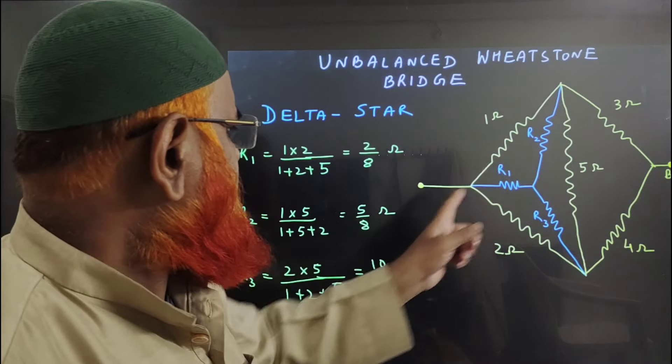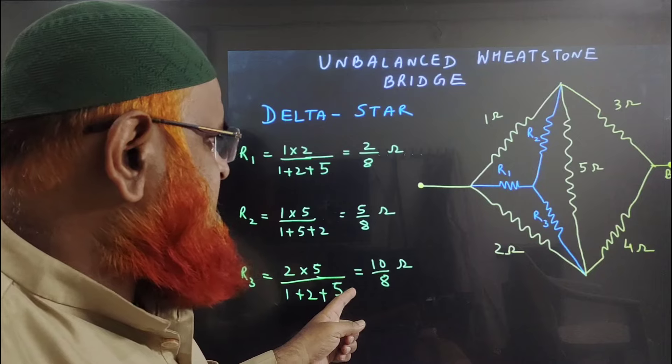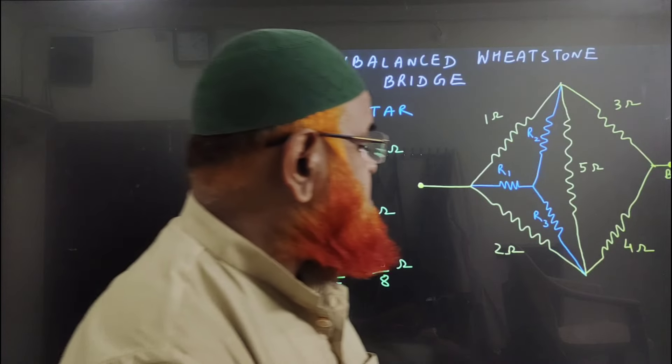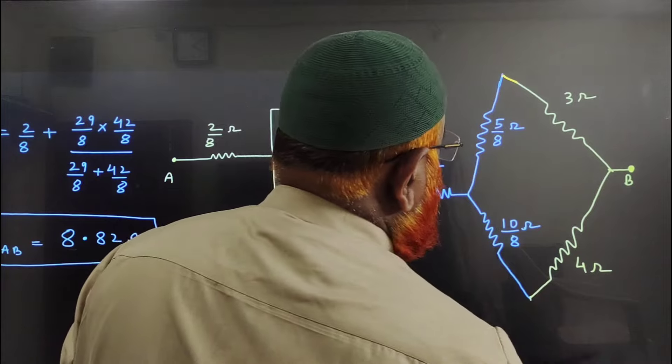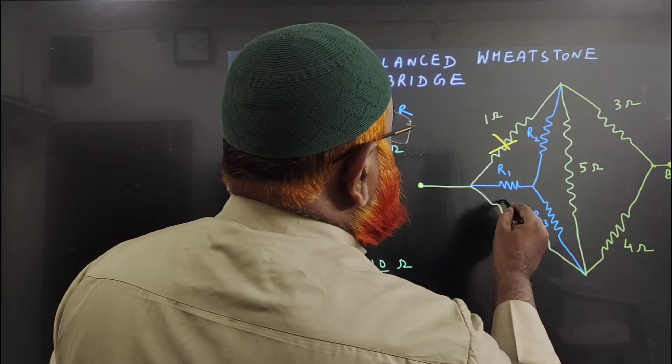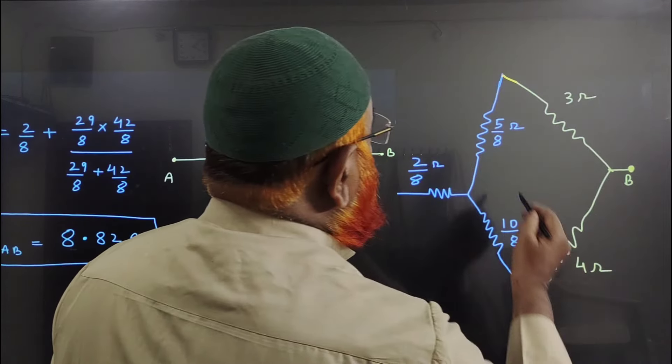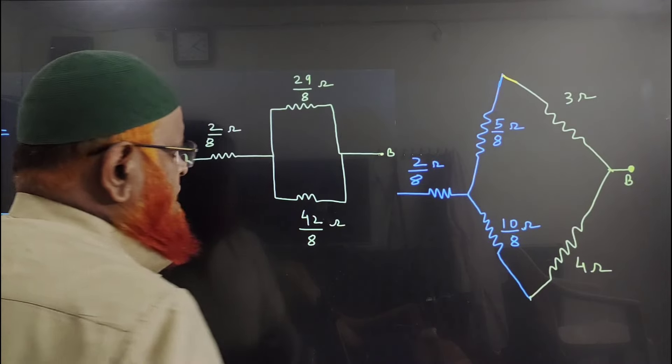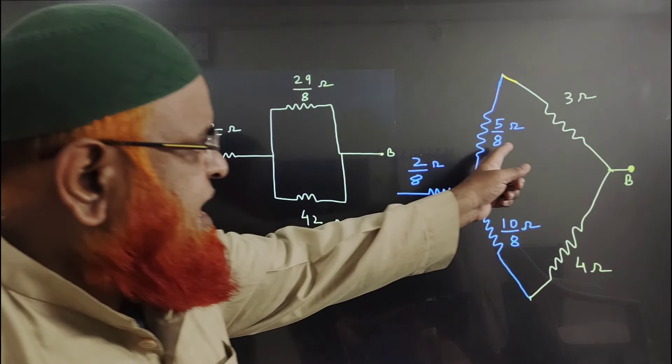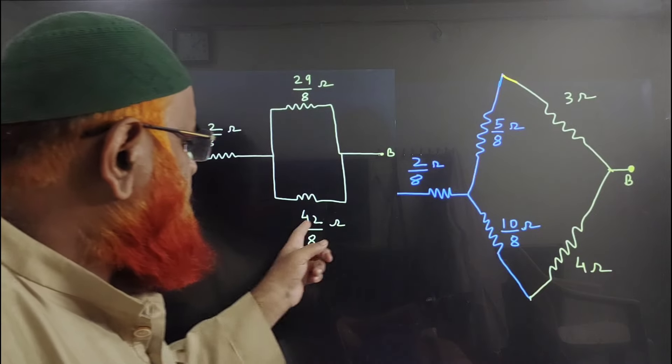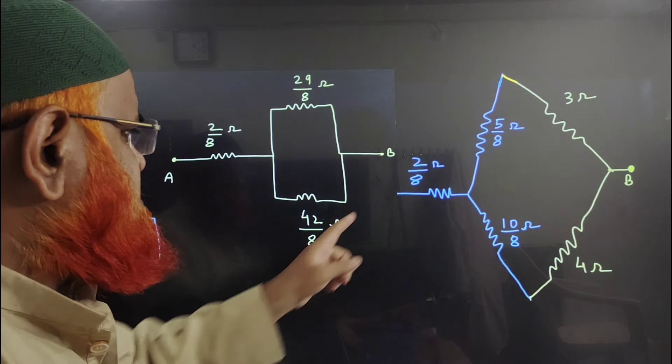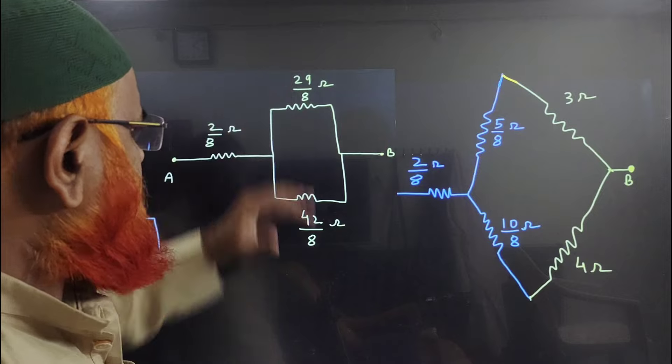After getting all these using delta-star trick, I am removing these three and getting only the remaining part. Now it's very easy to solve: 5 by 8 plus 3 gives you 29 by 8, 10 by 8 plus 4 gives you 42 by 8, and 2 by 8 remains.